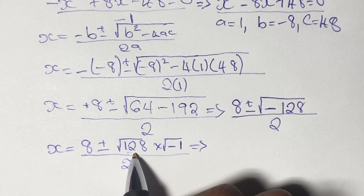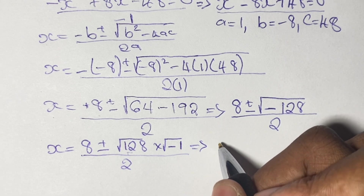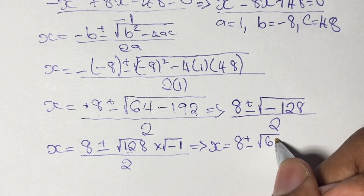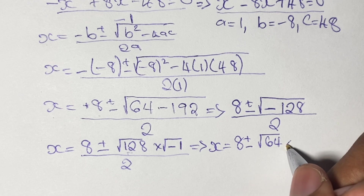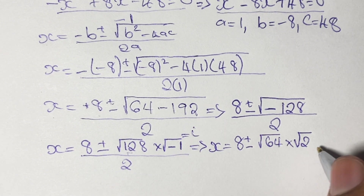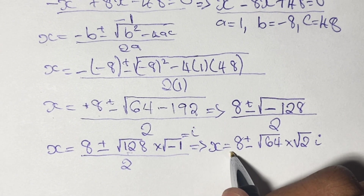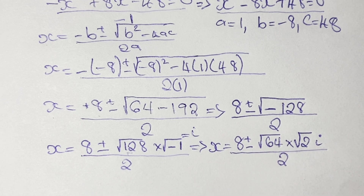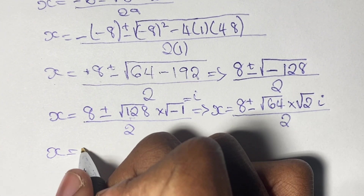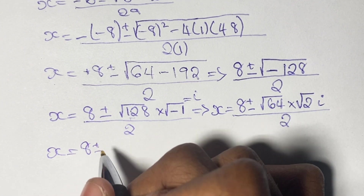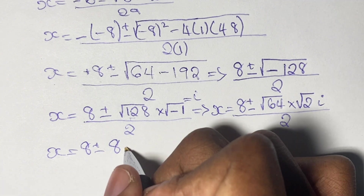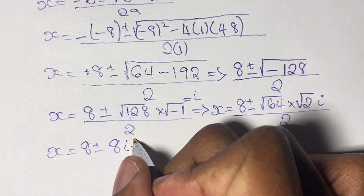We write our equation again over 2 with this in mind. We find two factors of 128 — we choose 64 and 2 — so we have the square root of 64 times the square root of 2. And since the square root of negative 1 is our imaginary number i, the expression becomes 8 plus or minus the square root of 64 times the square root of 2 times i, all divided by 2.